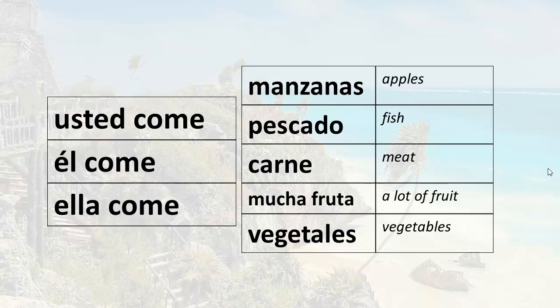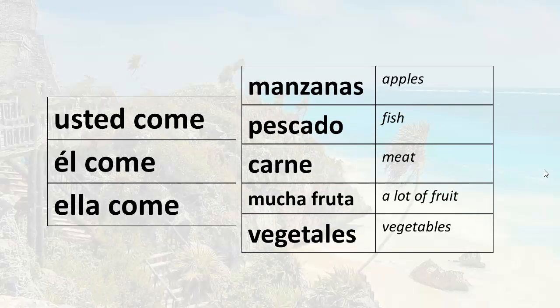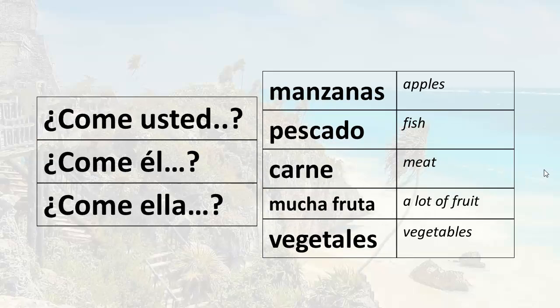What we're going to do in this lesson is convert statements into yes or no questions, and it's very simple. For example, the statement 'usted come manzanas' can be converted into a question by simply reversing the subject pronoun and verb word order. The same works for 'él come manzanas' or 'ella come manzanas.' So usted come becomes come usted, él come becomes come él, ella come becomes come ella. Just switch the word order and you're ready to start asking yes or no questions.